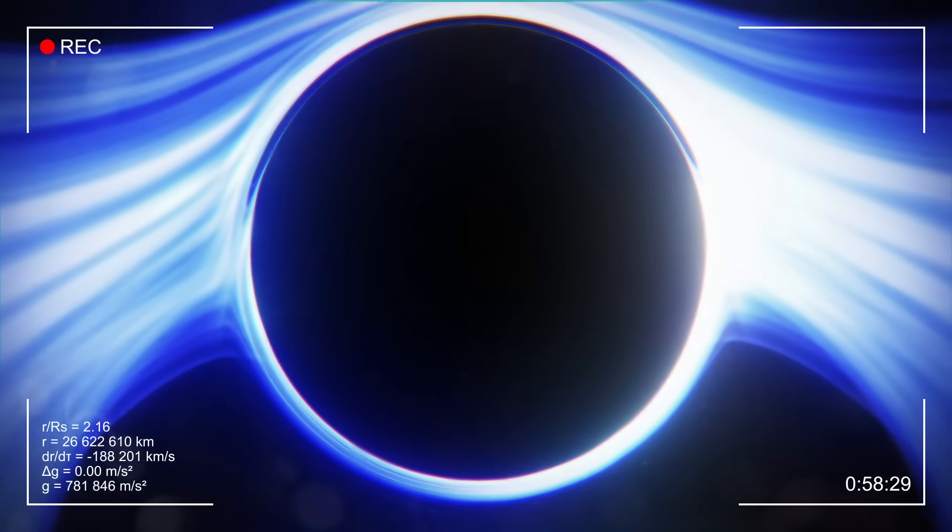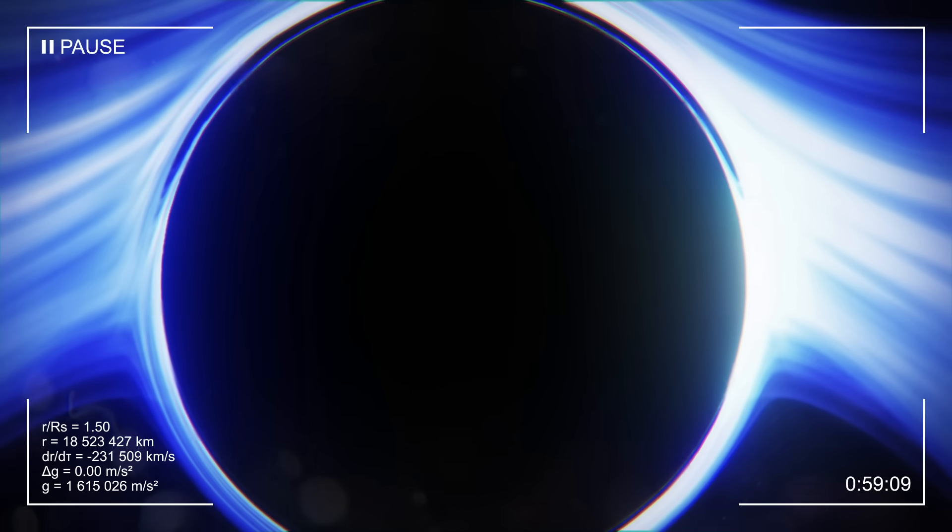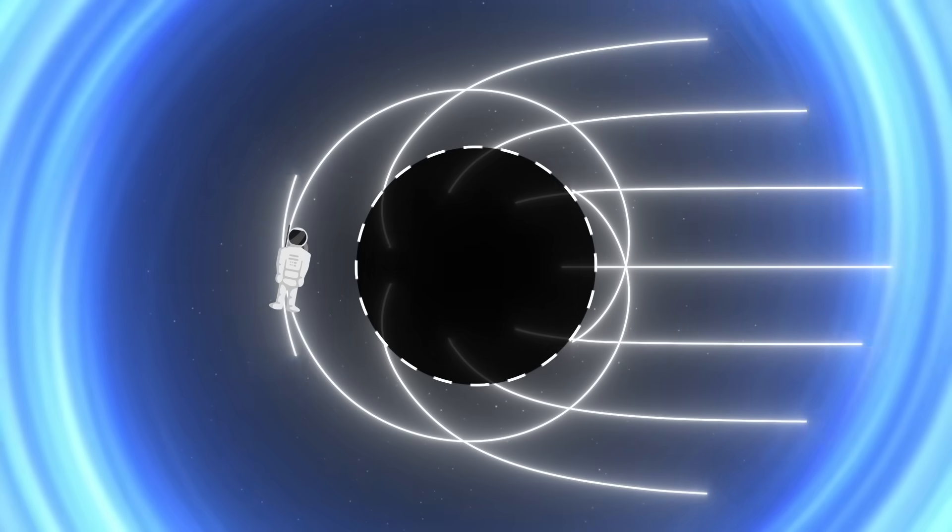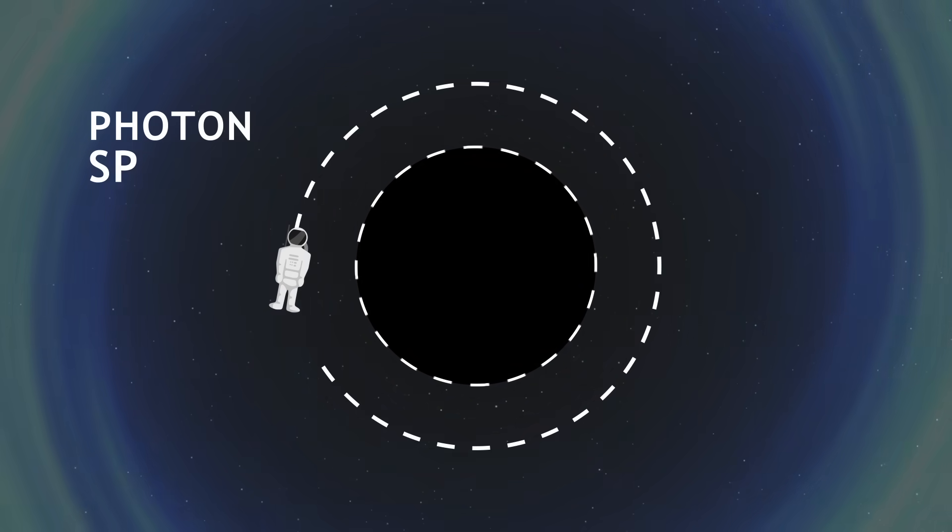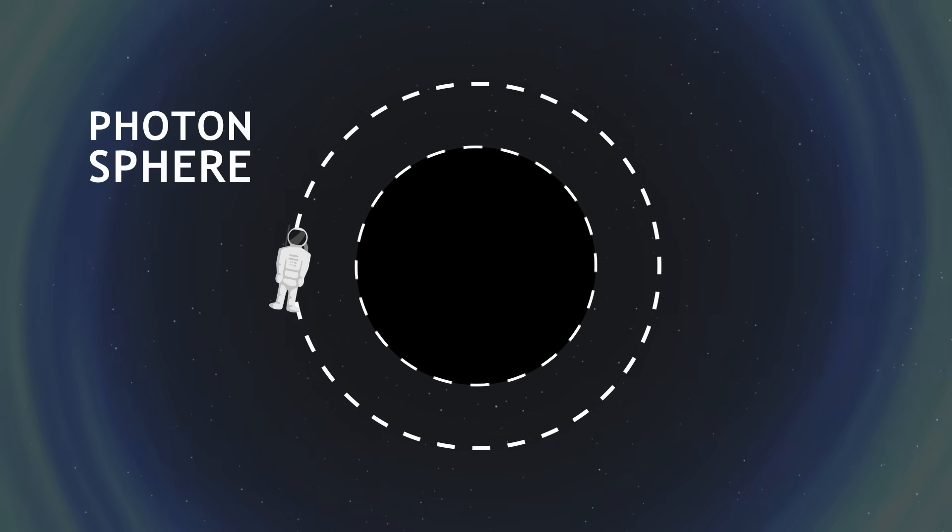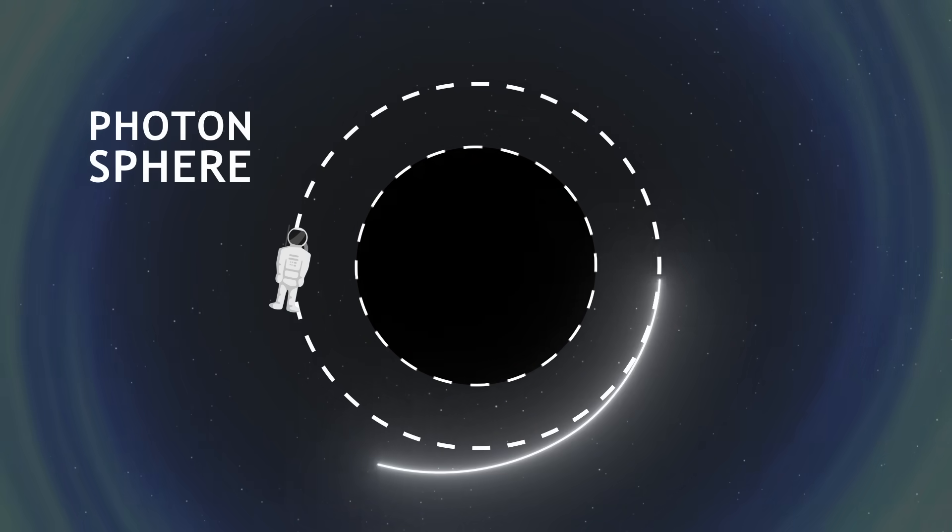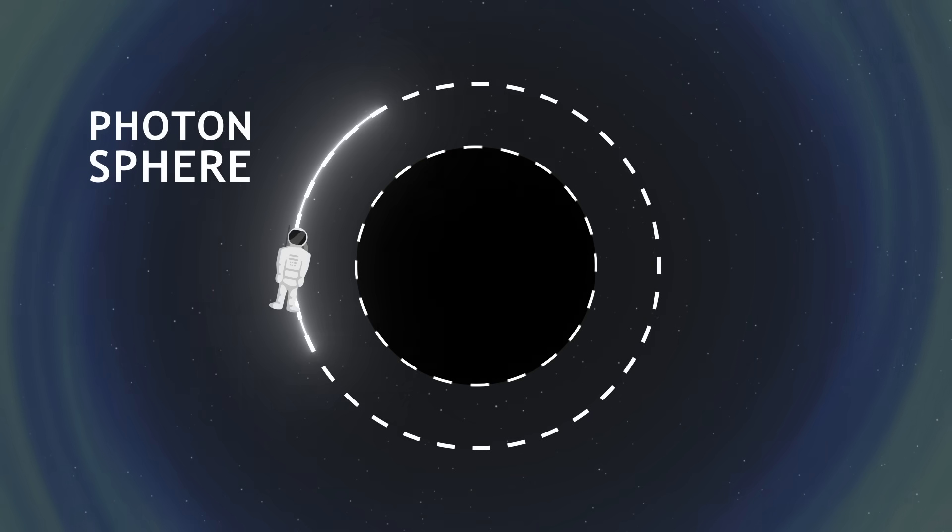Just two minutes later, we are twice as close to the horizon. From now on, any light coming from outside is destined to fall into the black hole. This is called the photon sphere. At this precise distance, it's even possible for light to orbit the black hole.